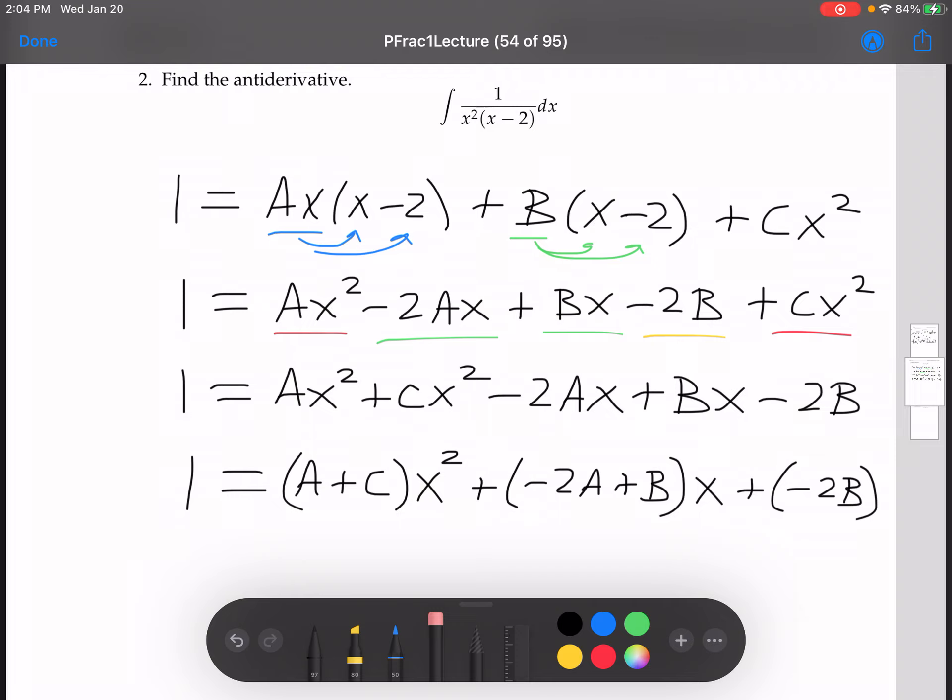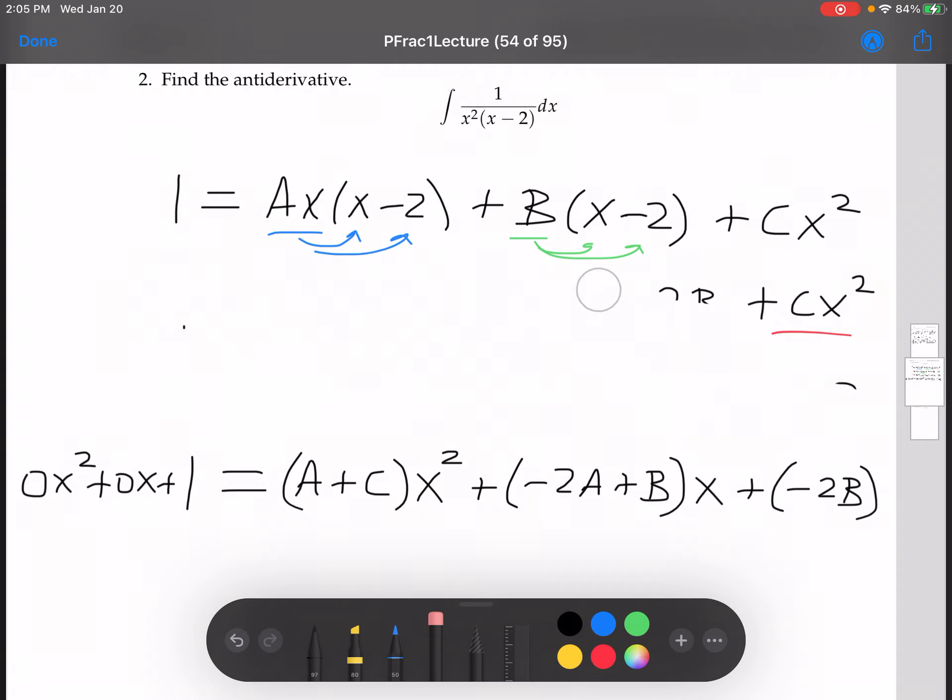All right, so now I'm going to use that algebra trick where when two polynomials are equal, they have the same coefficients. So I can write 1 as 0x squared plus 0x plus 1, and we can equate coefficients. So 0 is A plus C, 0 is negative 2A plus B, and 1 is negative 2B.